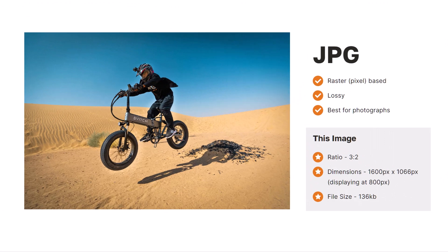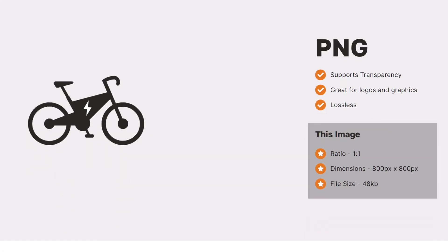Let's start with JPEGs. This is a raster-based lossy compressed format, which means they are pixel-based and discard some of their data when compressed. JPEG is the most commonly used image format and this format is the best one for photographs, as they support 16 million colors and generally compress well, giving them the lightest file size while retaining most of their quality.